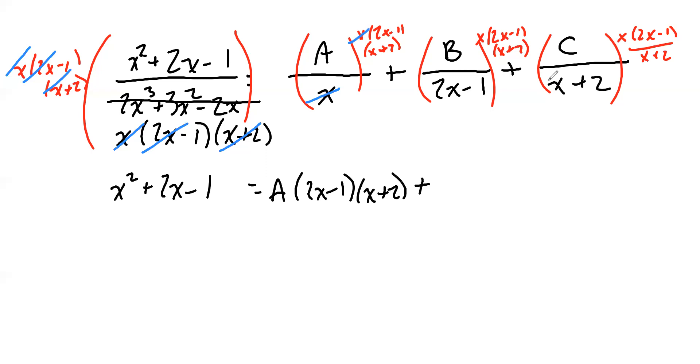But on the other fractions, not everything cancels. On the first fraction, only the Xs cancel. And that leaves me with the A and the 2X minus 1 and the X plus 2. On the second fraction, the 2X minus 1s cancel, and that leaves me with the B, X, and the X plus 2.